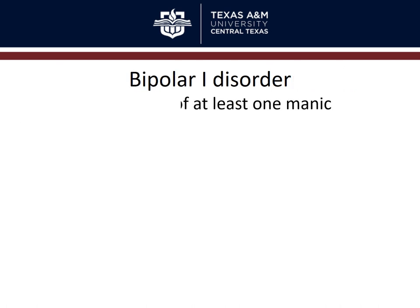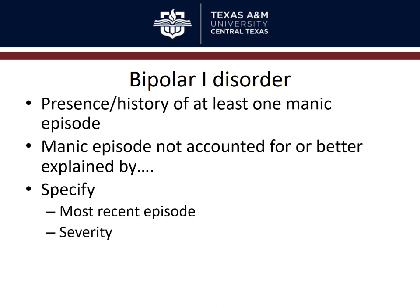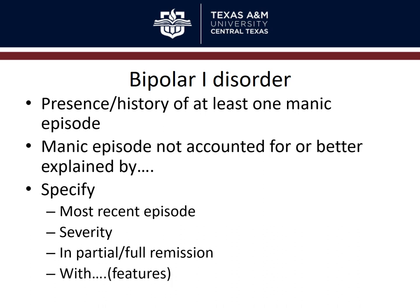Bipolar 1 requires presence or history of at least one manic episode — that's essentially it, as long as it's not accounted for by a drug or better explained by another disorder. You then specify the most recent episode — whether manic, hypomanic, or depressive, because all can occur in bipolar 1 — specify severity, remission status, and features such as melancholic features, atypical features, and seasonal pattern.